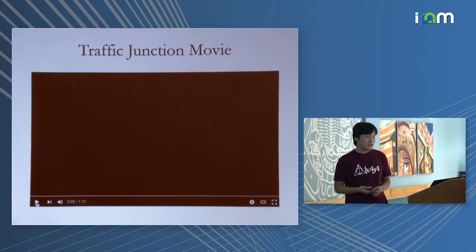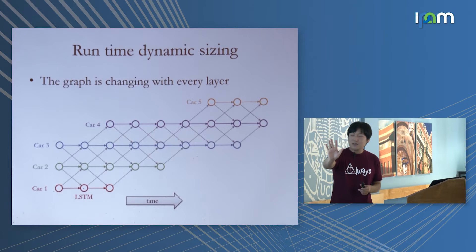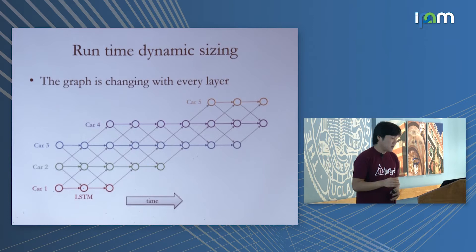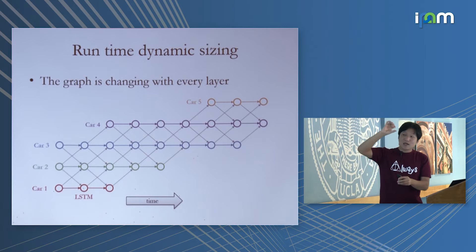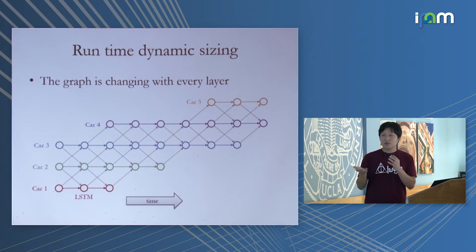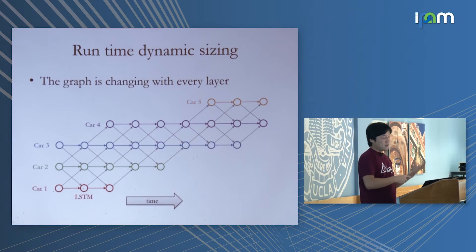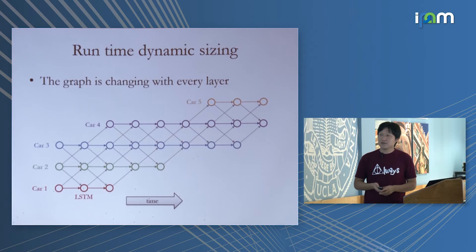This is just a graph neural network, but something interesting happens: over an episode, cars arrive and leave so the graph changes shape at every layer, not just per input. This is something graph neural networks handle fine — a dynamically changing graph structure.